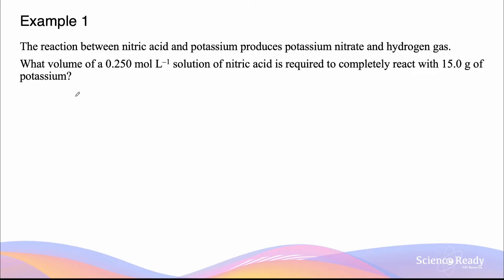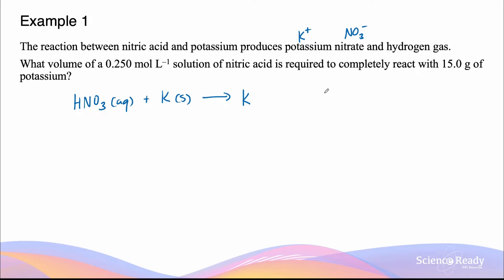Nitric acid has a chemical formula of HNO₃, and this is usually in a solution, so the state here is aqueous. Potassium by itself is a metal, so solid at room temperature. The reaction produces potassium nitrate, which is an ionic compound. Potassium is in group one and nitrate has a charge of minus one, so the ratio is one to one, giving the empirical formula KNO₃, also in aqueous form.